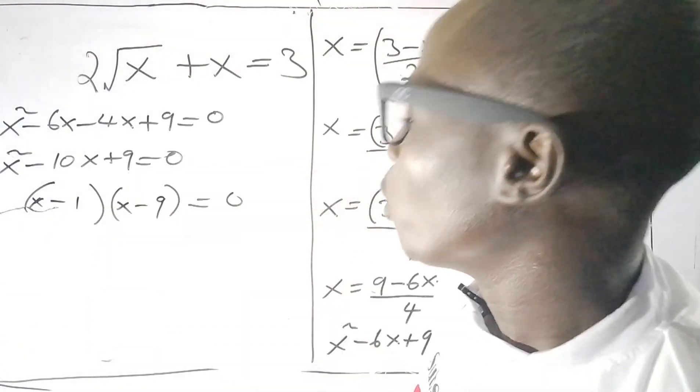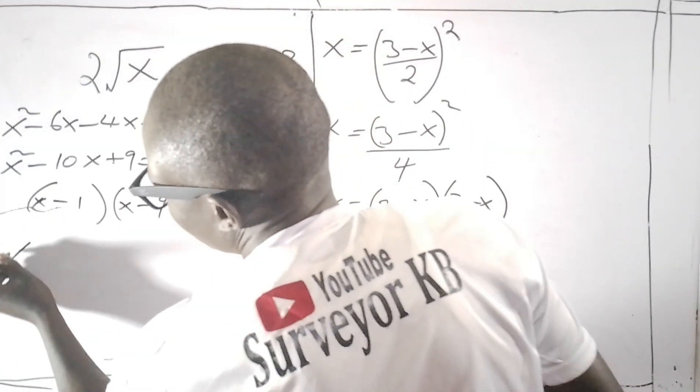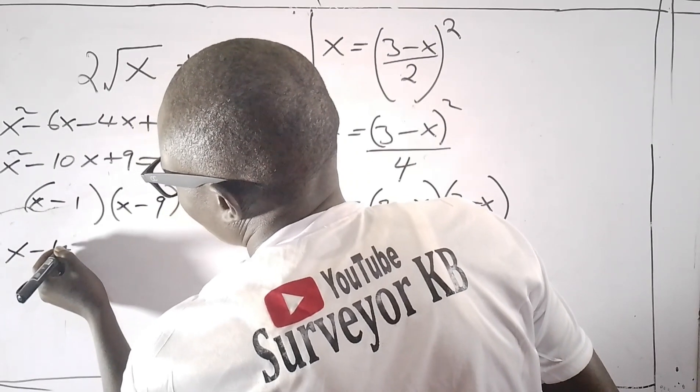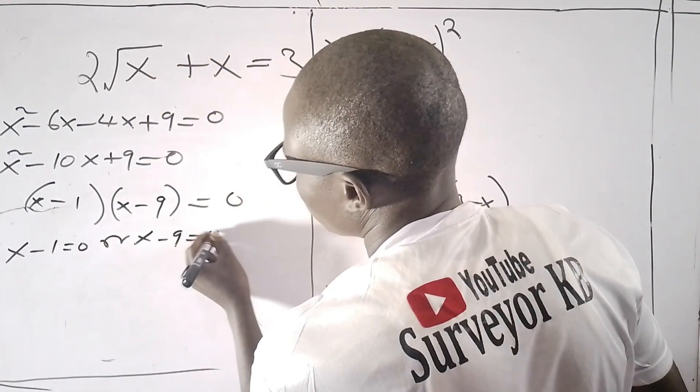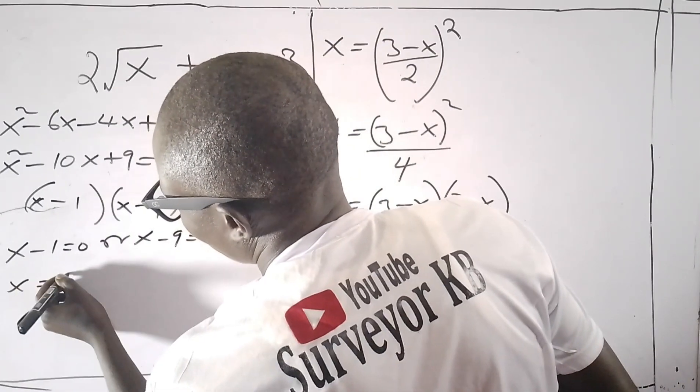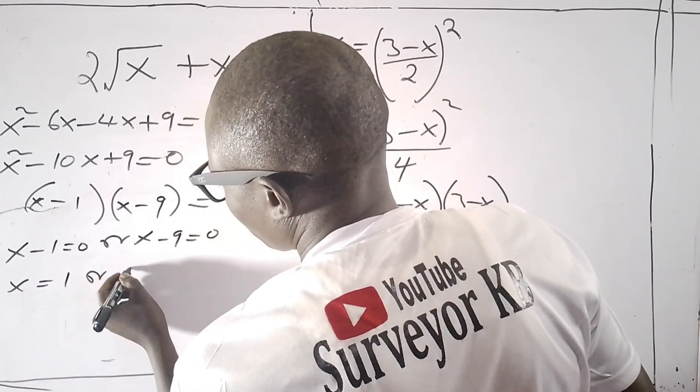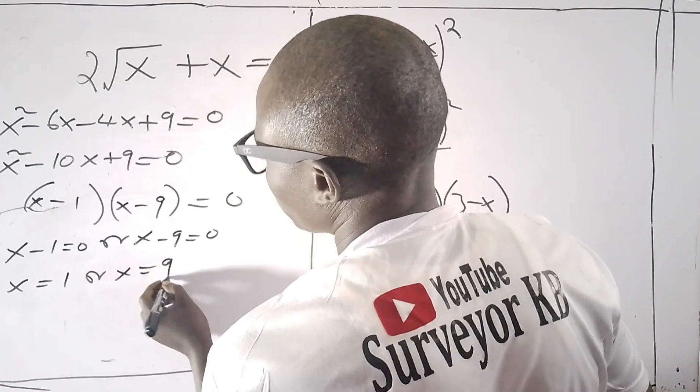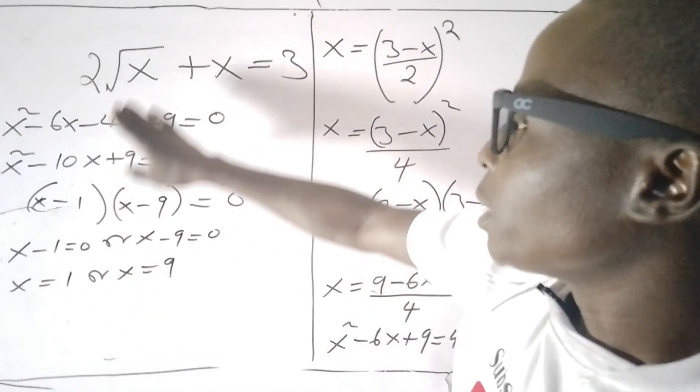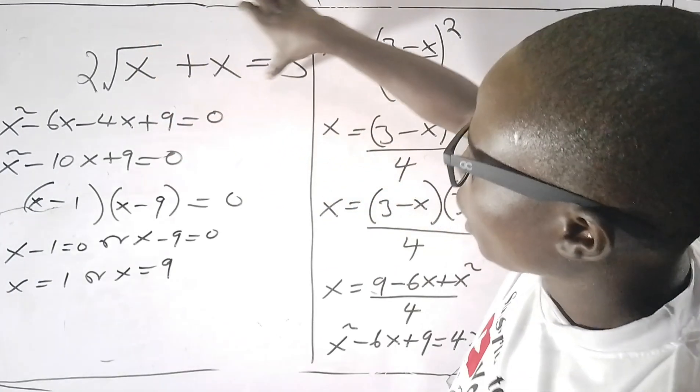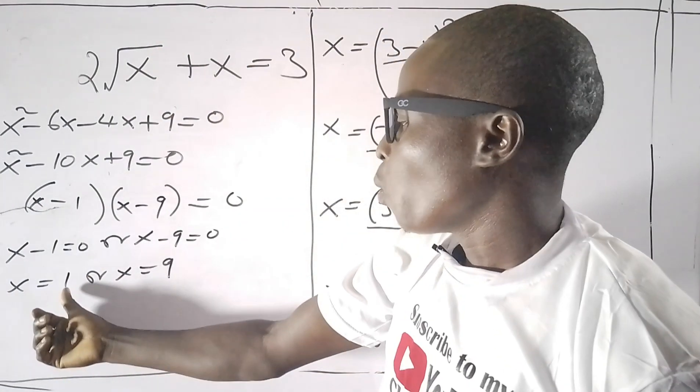That means (x - 1) equals 0 or (x - 9) equals 0. So x equals 1 or x equals 9. The value of x that will satisfy this equation is either 1 or 9.